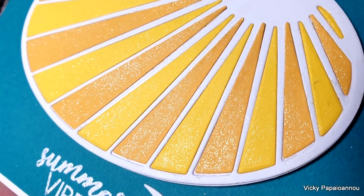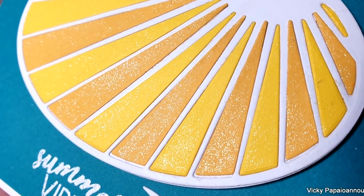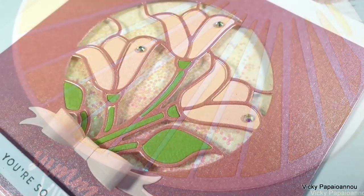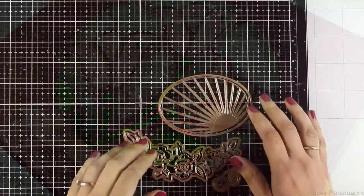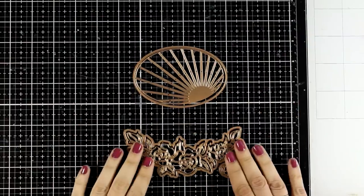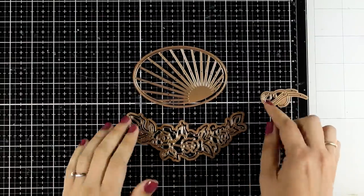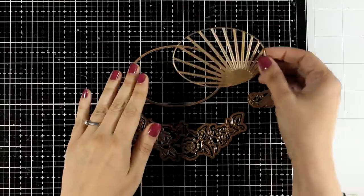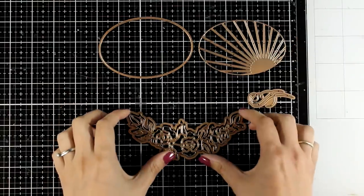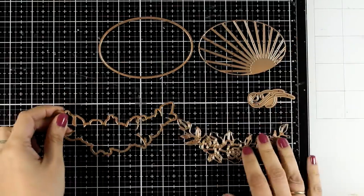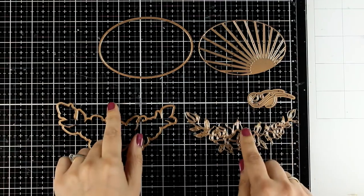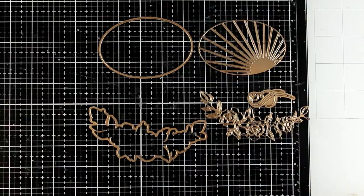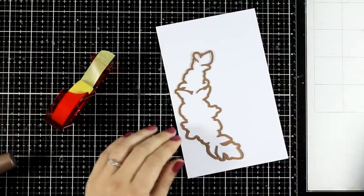Maybe you already have in your stash some dies that look like that. For my examples today and to show you the 3 different techniques I will be using some dies by Spellbinders from the latest release. So this is the Radiant Oval die set by Spellbinders and it comes with lots of dies that you can mix and match. I will share 2 cards using this set today using 2 different techniques to get that stained glass look and I do have another set from the same collection to show you one more technique at the end.